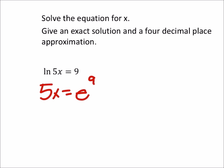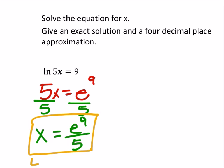Now if I wanted to solve for x, I would just divide by 5 on both sides of the equation, which gives me x equals e to the power of 9 over 5. This is considered the exact solution.